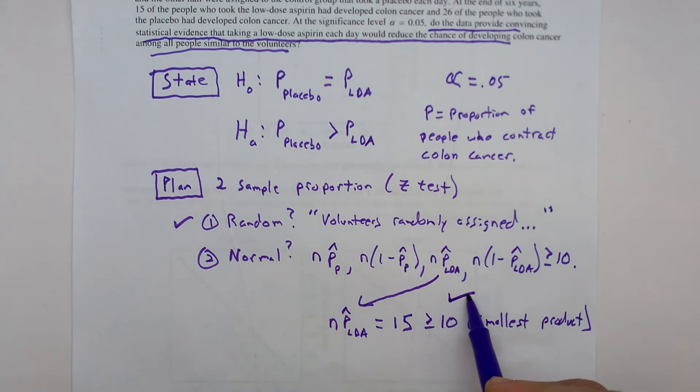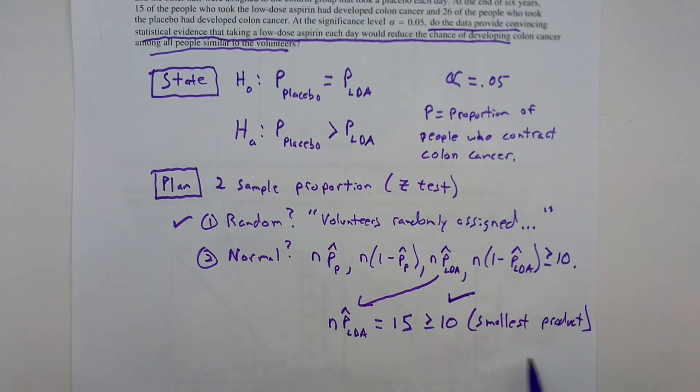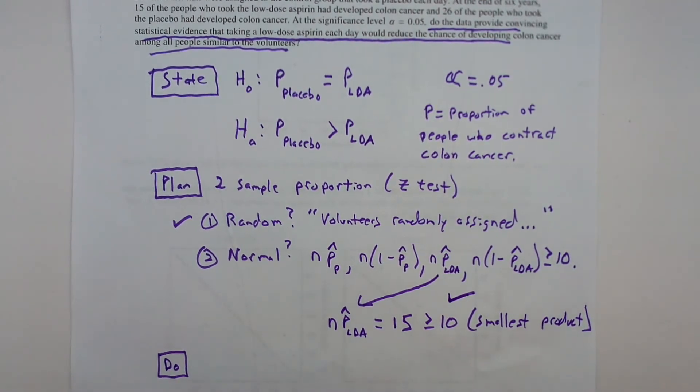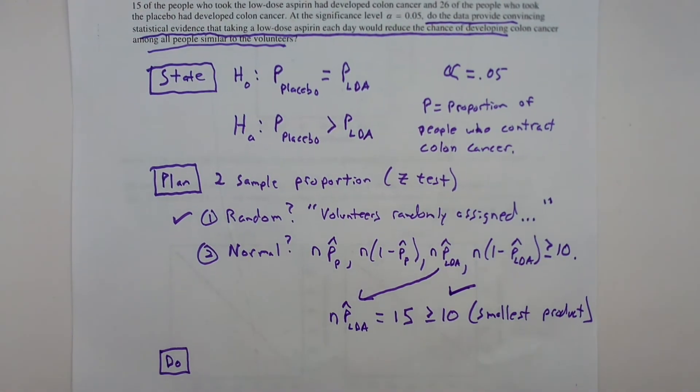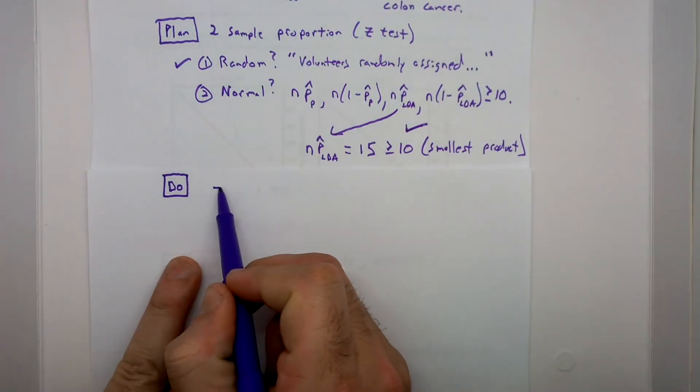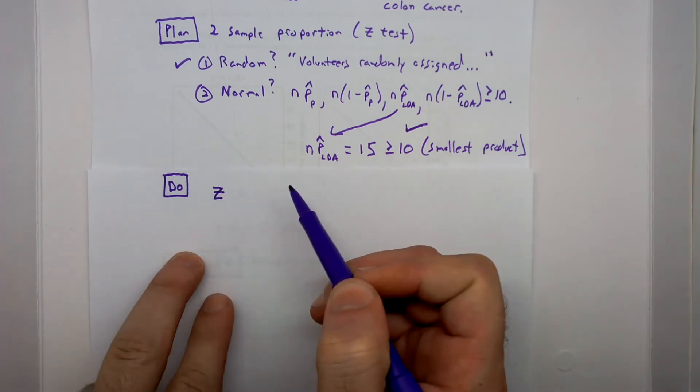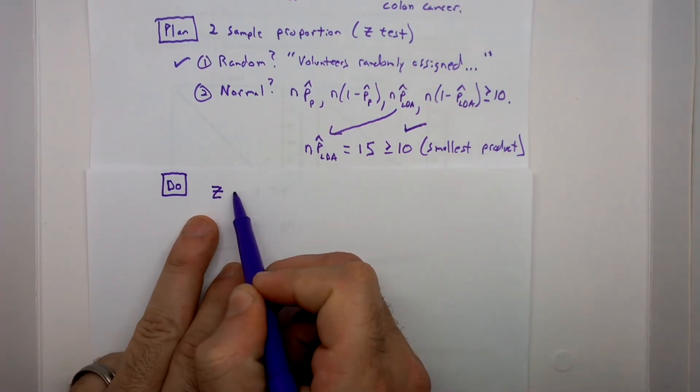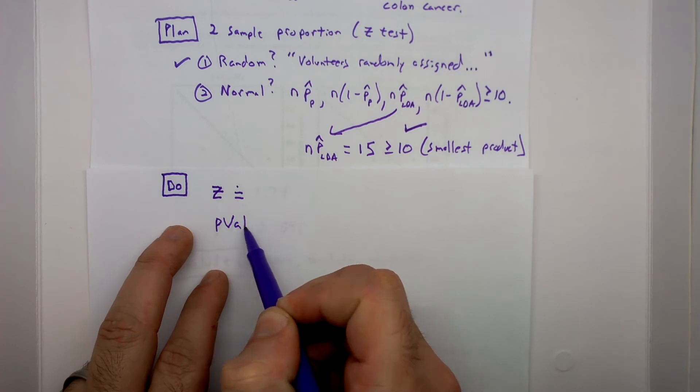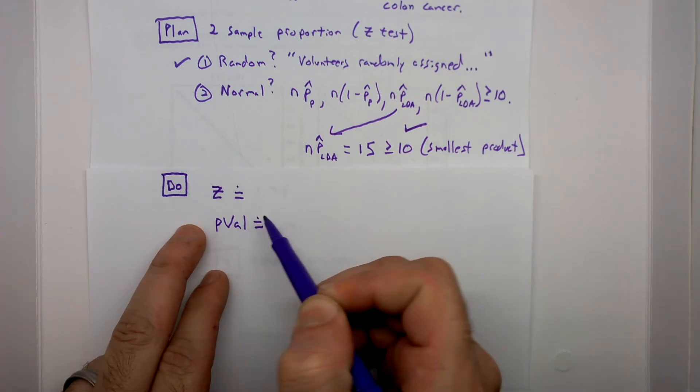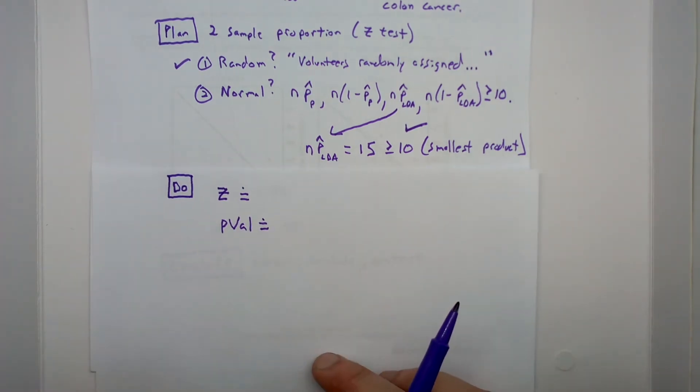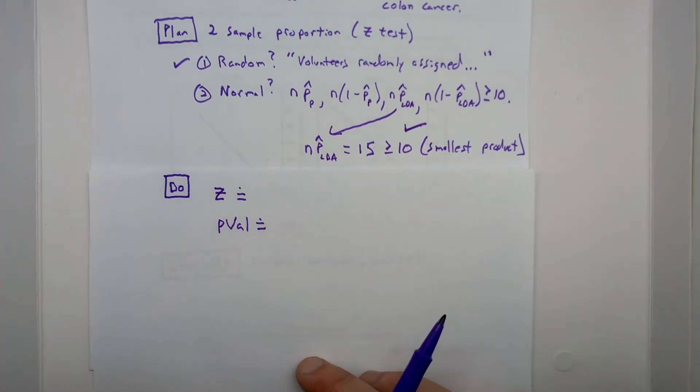We could look at the independent condition, but for the purpose of this problem, we're going to skip that. State, plan. Now do. For our do, we're going to turn the heavy lifting over to our calculator. We will look to report our test statistic, which in this case is a Z, and our p-value. Degrees of freedom will not be a factor since we were dealing with proportion here and not a mean.